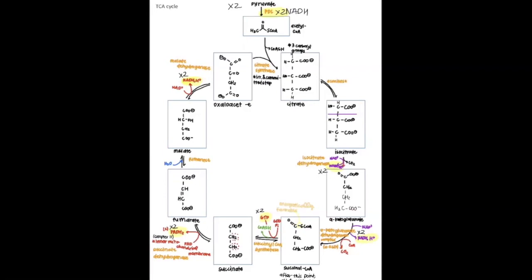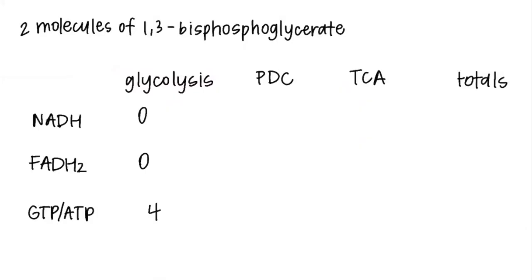Let's go and add that all up. From the PDC we made two NADH, zero FADH, and zero GTP. Then from the TCA we made six NADH, two FADH2, and two GTP. Now we add everything up: in total we have eight NADH, two FADH2, and six GTP.